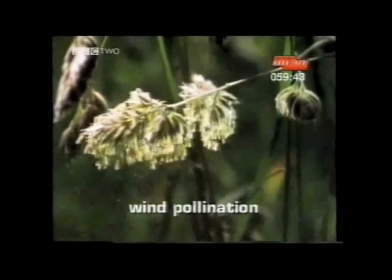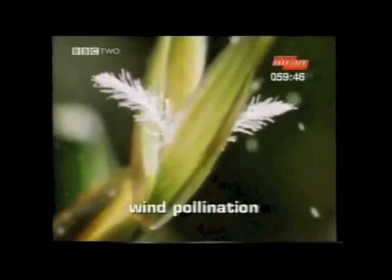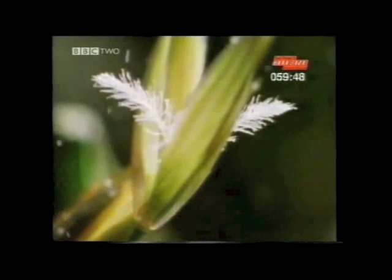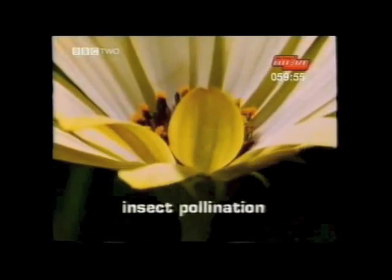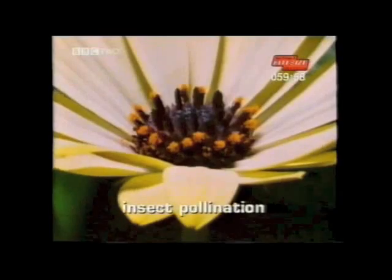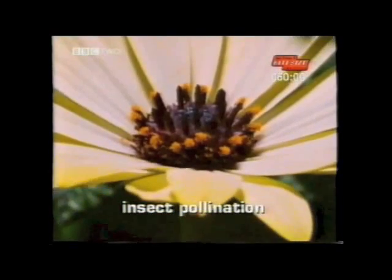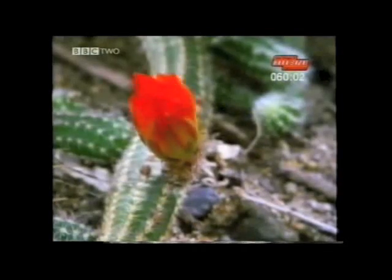Wind-pollinated flowers have dull, tiny petals and no scent. The anthers hang outside the flower, shedding pollen that is dispersed by the wind and picked up by a feathery, sticky stigma. Insect-pollinated flowers are scented and have brightly coloured petals to attract animals, and the sex organs are inside the flower.